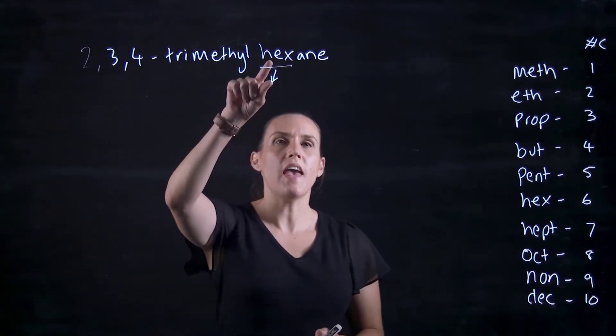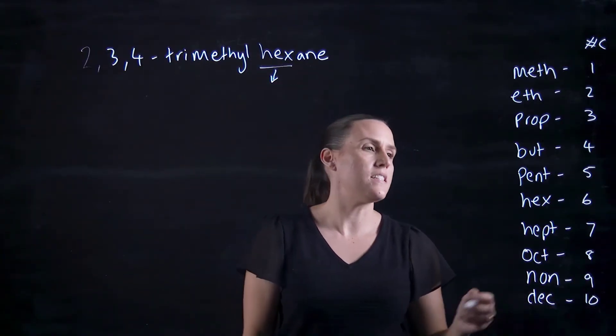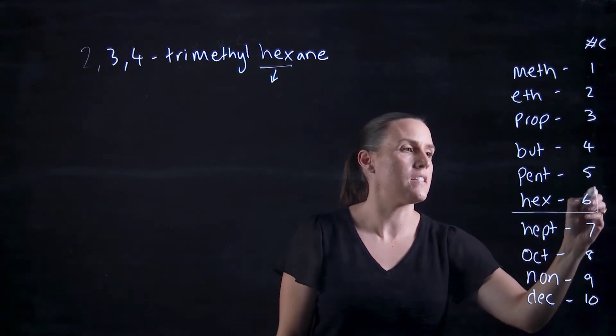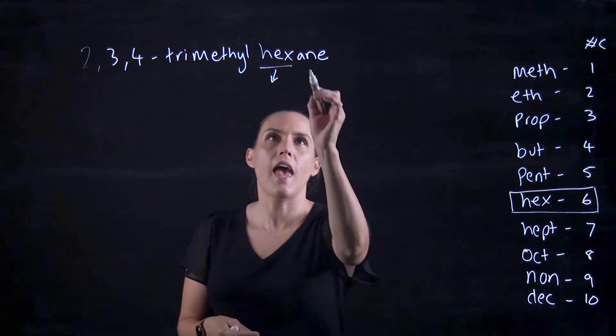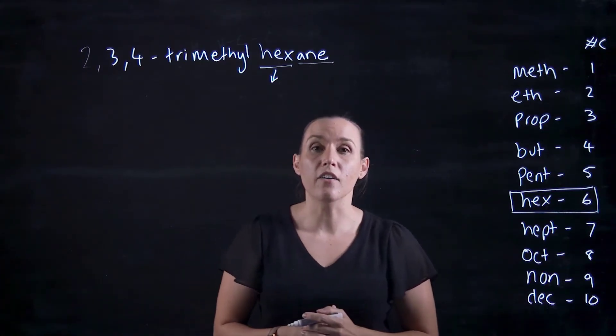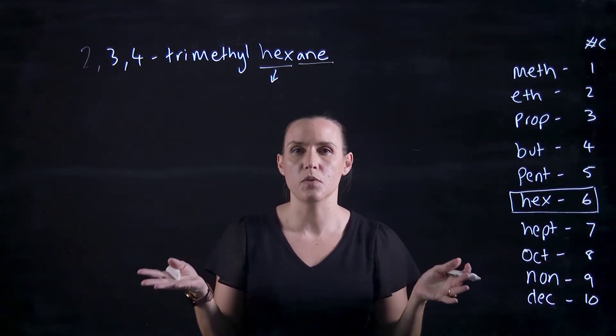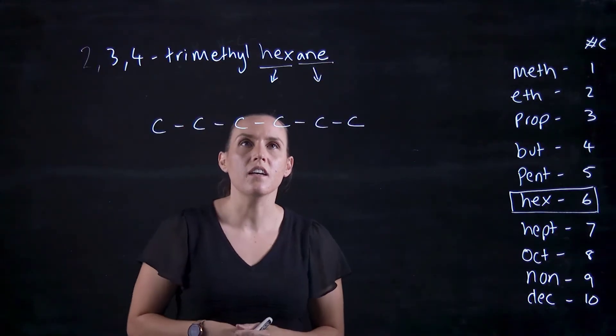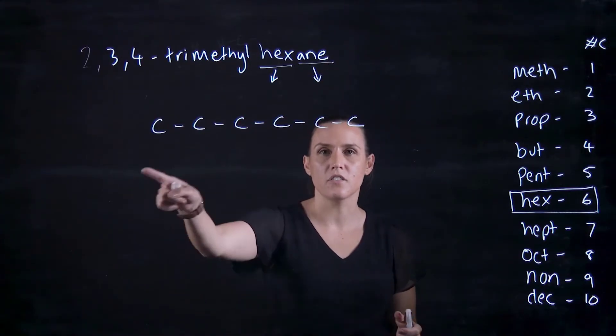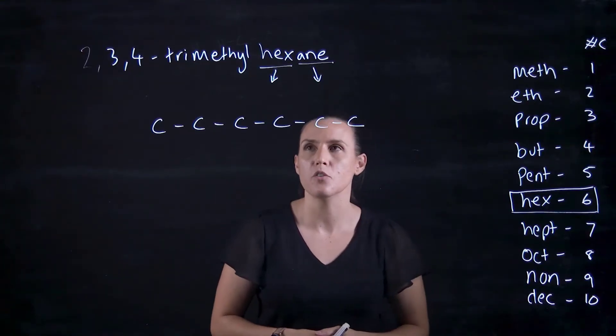So if I have hexane, that's telling me that I've got a six carbon chain, which is my main backbone, and ane is an alkane, so I've got single bonds between those carbons. So putting those things together, I've got a hexane, so let's draw out our six carbon single bond.